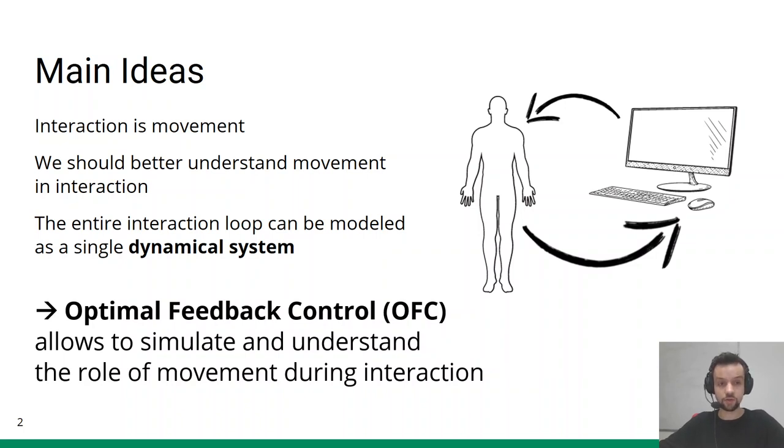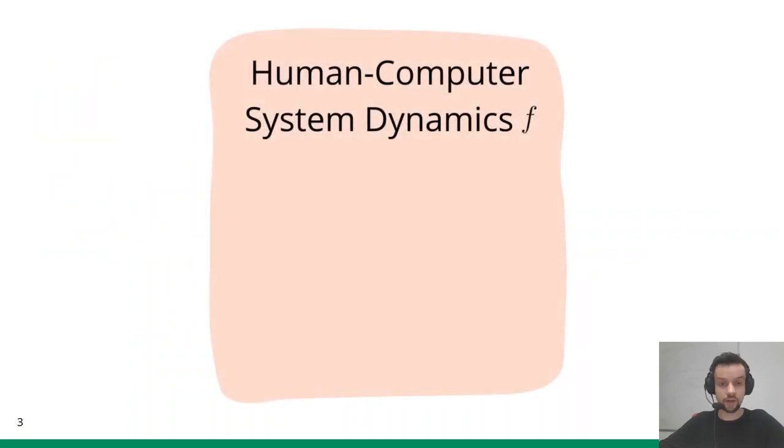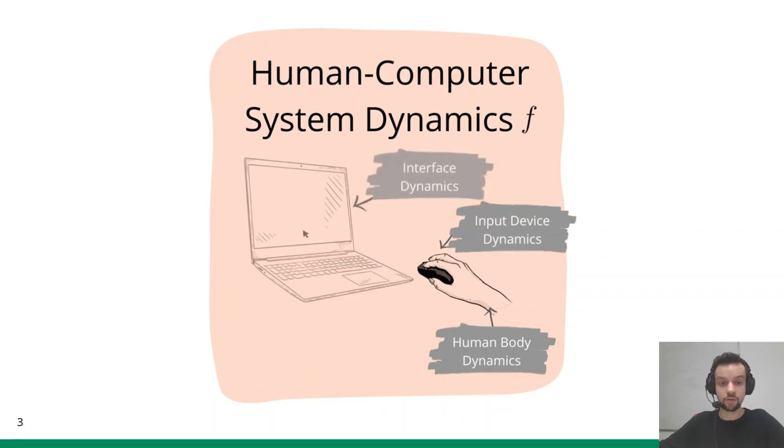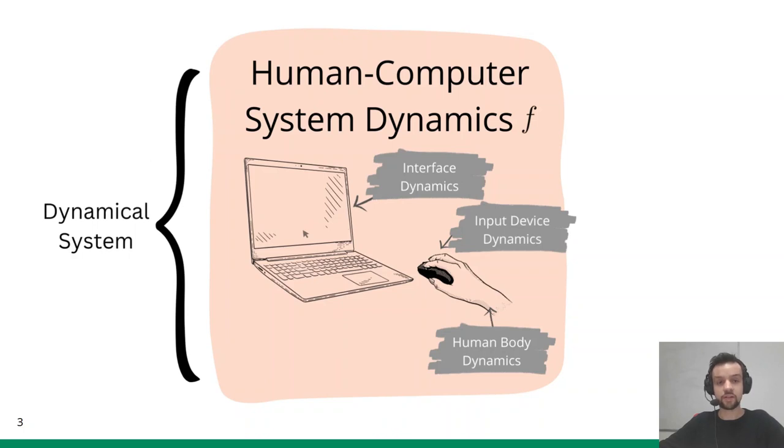The idea is as follows. The human-computer system dynamics F describe how the user's body reacts to muscle control signals, how input devices react to movements of the user, and how the interface reacts to input device signals. Crucially, we cannot teleport the input device from one position to another, but need to activate muscles that build up force to accelerate and decelerate the input device. To account for these constraints, we propose to describe interaction as a dynamical system which determines how movement affects the physical and virtual objects the user is interacting with.